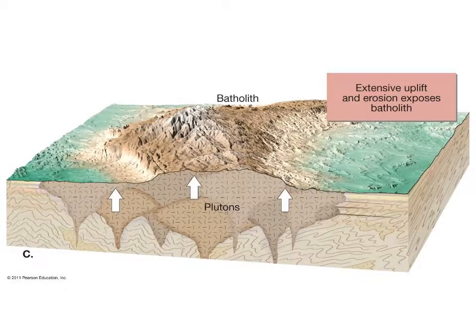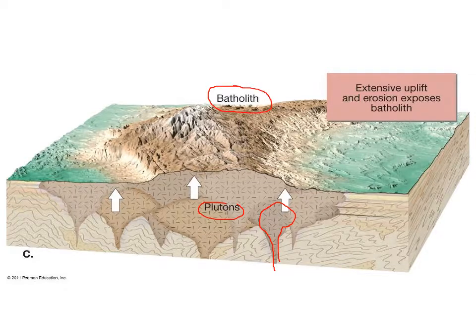Here's an example of a batholith. We have a bunch of plutons — all these blobs coming up and coalescing — forming a whole mountain range. The Sierra Nevada Mountains in California is one big batholith, all granite. We're also going to see the Pikes Peak batholith, a fairly large batholith that contains Pikes Peak and some surrounding mountains, on the trip as well.